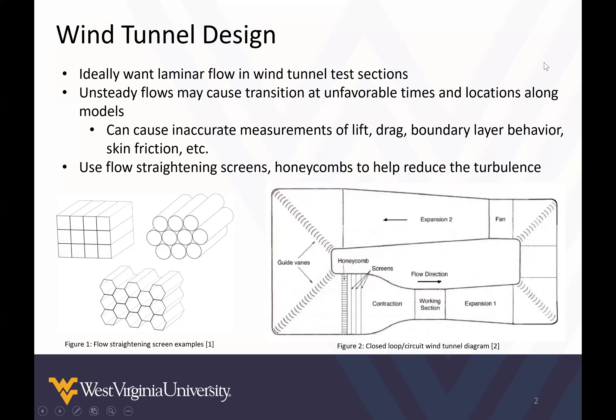For a typical wind tunnel design, when most people think about wind tunnels they think about closed loop wind tunnels. Ideally we always want laminar flow in wind tunnel test sections. Unsteady flows can cause transition at unfavorable times and locations on models, which can lead to inaccurate measurements of lift, drag, boundary layers, and other items. So we use flow straightening screens and honeycombs to help reduce turbulence. Here are some examples of flow straightening screens — honeycombs in circular and square shapes — and a typical closed loop wind tunnel.